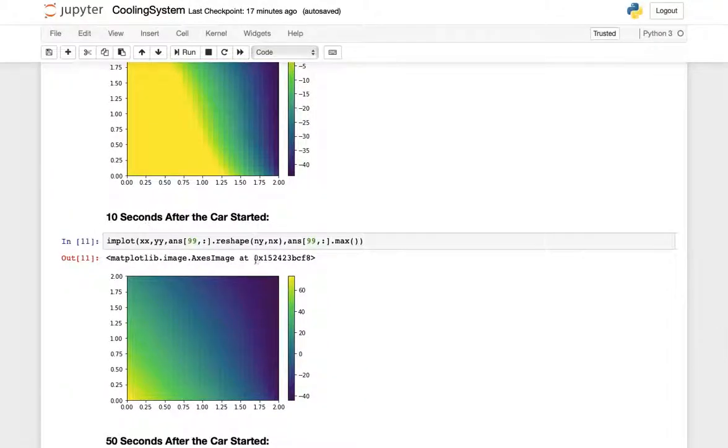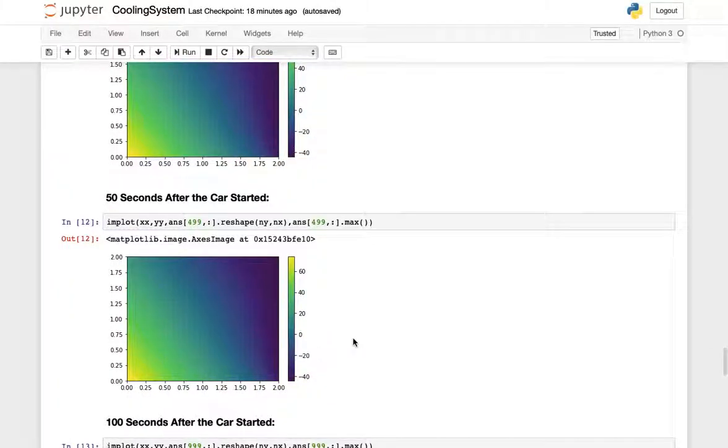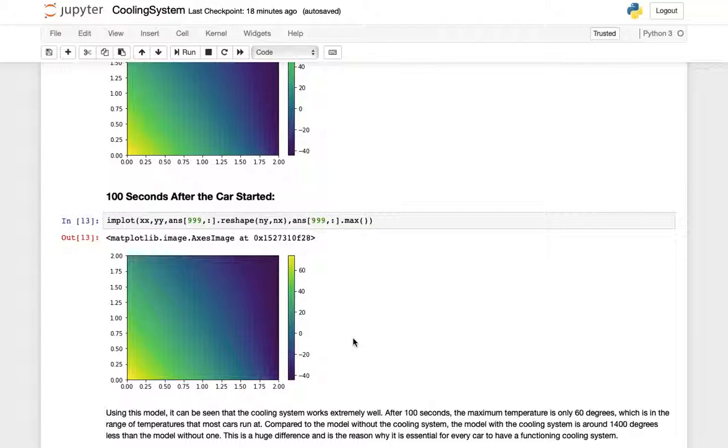After 10 seconds we still have this negative 45 degrees here and we have about over 60 degrees for our lower temperature, which seems like it could be bad but as we look on it's the same after 50 seconds and it's the same after 100 seconds. After the full time this car is running, our heat has actually been maintained.